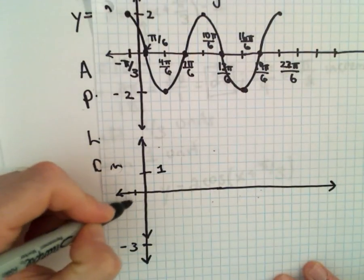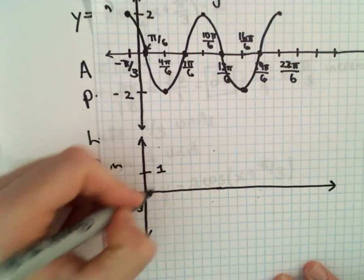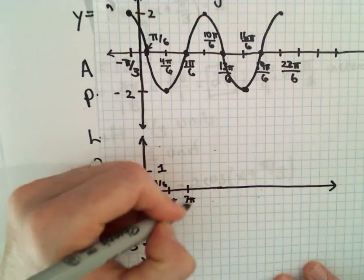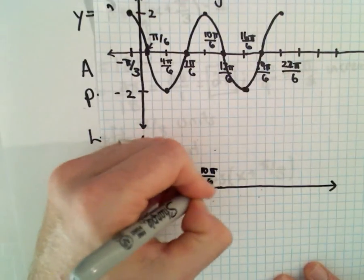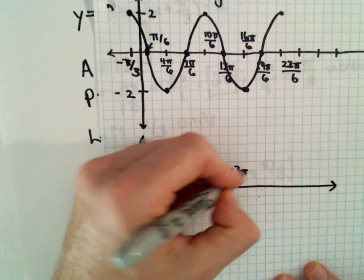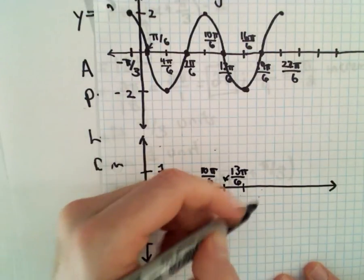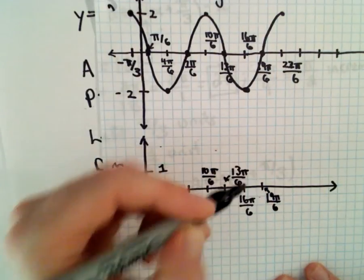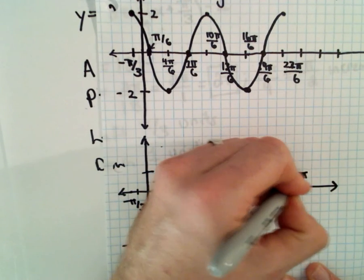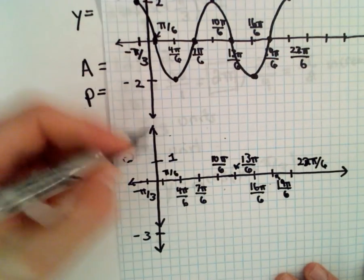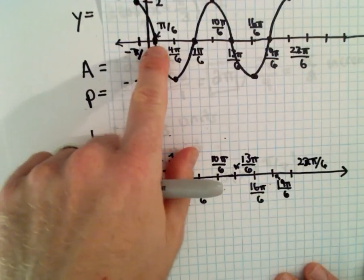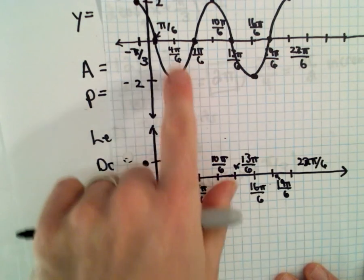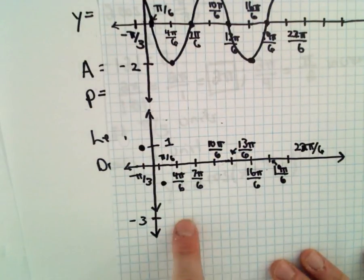The x-axis increments stay exactly the same: negative pi over 3, pi over 6, 4 pi over 6, 7 pi over 6, 10 pi over 6, 13 pi over 6, 16 pi over 6, 19 pi over 6, and 22 pi over 6. Everything is just getting shifted down 1 unit. So instead of being at positive 2, we start at positive 1. Instead of going through pi over 6 comma 0, it's now going to go through pi over 6 comma negative 1. And at 4 pi over 6, instead of bottoming out at negative 2, it's going to bottom out at negative 3.